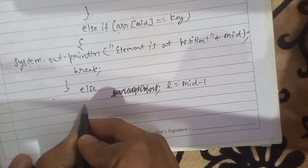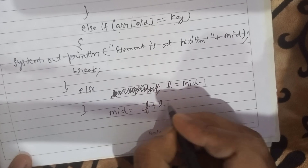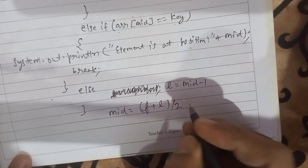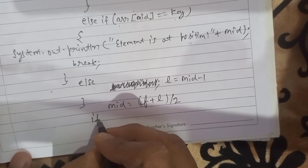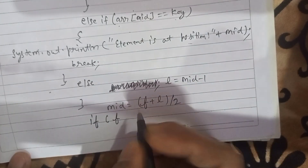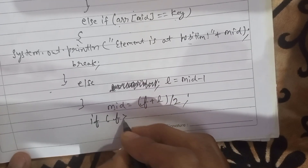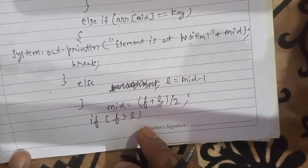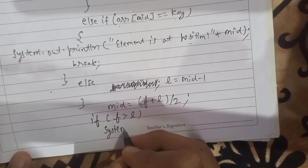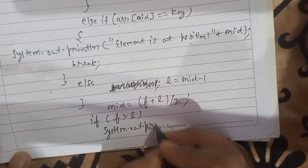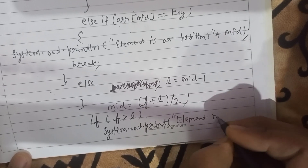After the if block closes, we update the mid value: mid = (f + l) / 2. One more point: after the loop ends, if the value of f is greater than the last value l, then the element we are searching for does not exist in the array — element not found.